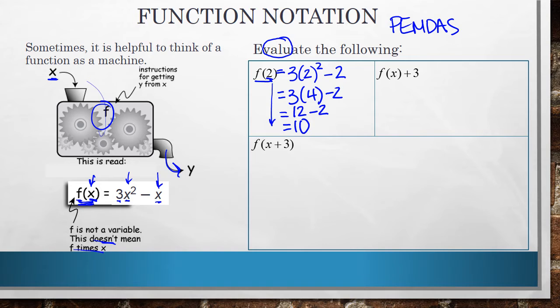So the second thing you see here is f of x plus 3, and notice that plus 3 is on the outside of the function. So this is just saying take your function, which is 3x squared minus x, and add 3 to it. That's all that that says to do, and there's nothing we can do from there.